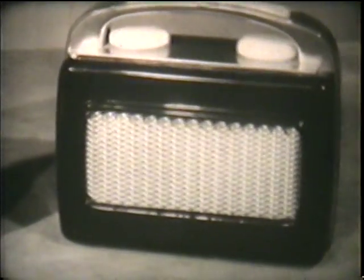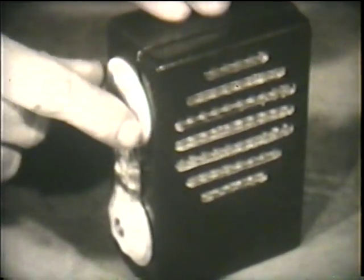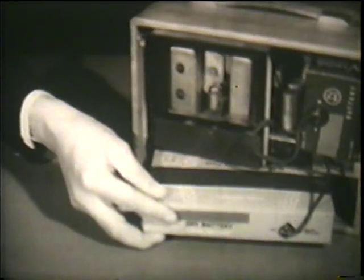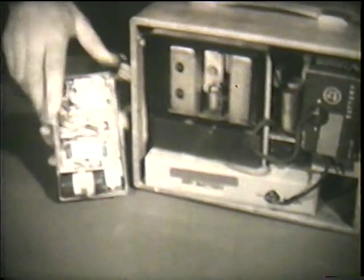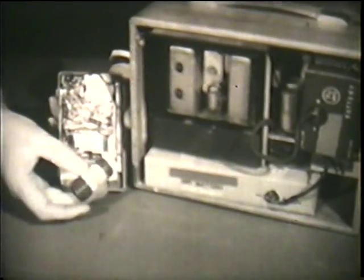The transistor can be used instead of an ordinary valve in all kinds of electronic circuits with many advantages. For example, any apparatus employing transistors can be made lighter and more compact, not only because the transistors themselves are smaller, but because they require such a small power supply. This portable valve radio needs this low-tension battery and this high-tension battery to operate it. In the transistor radio here, this small, low-voltage battery is all that is required to operate the receiver for an equivalent time.